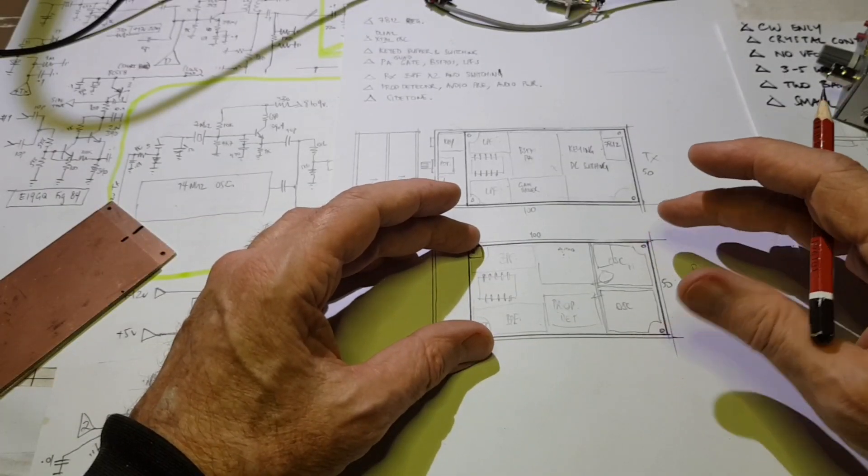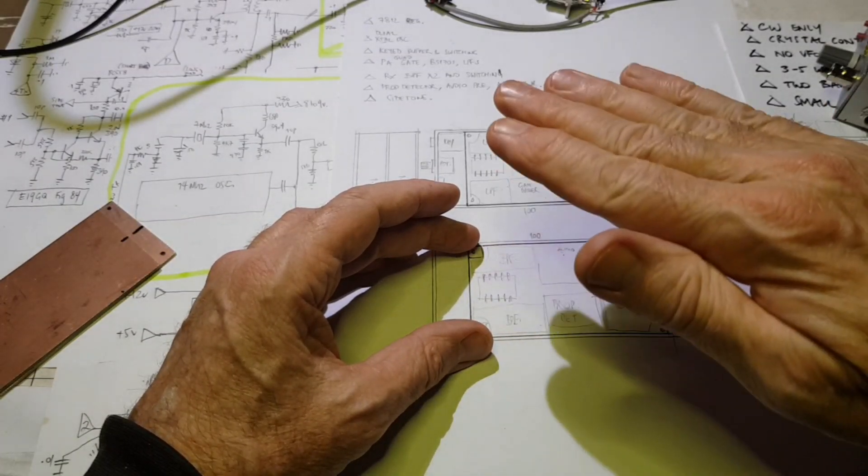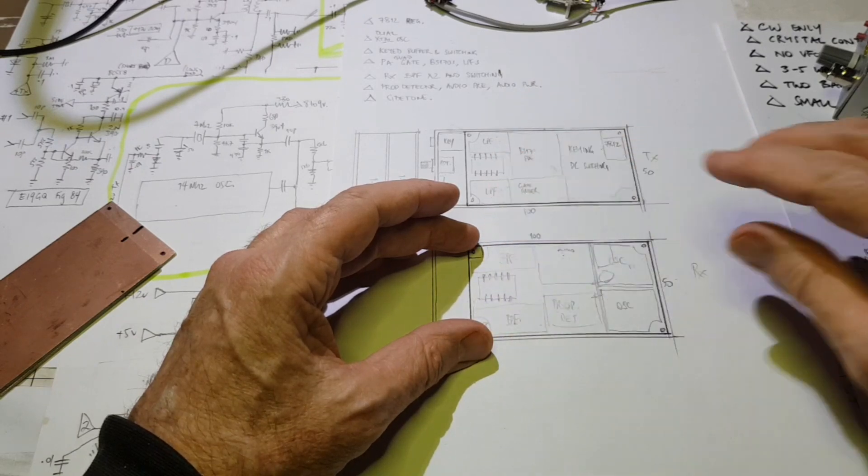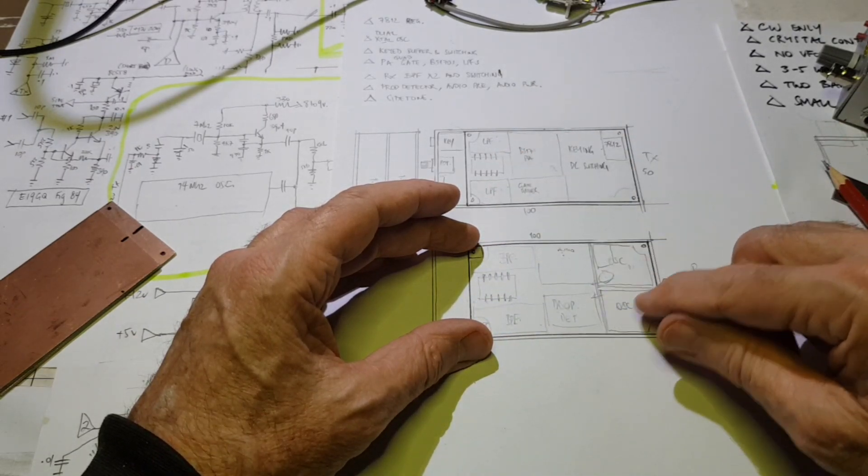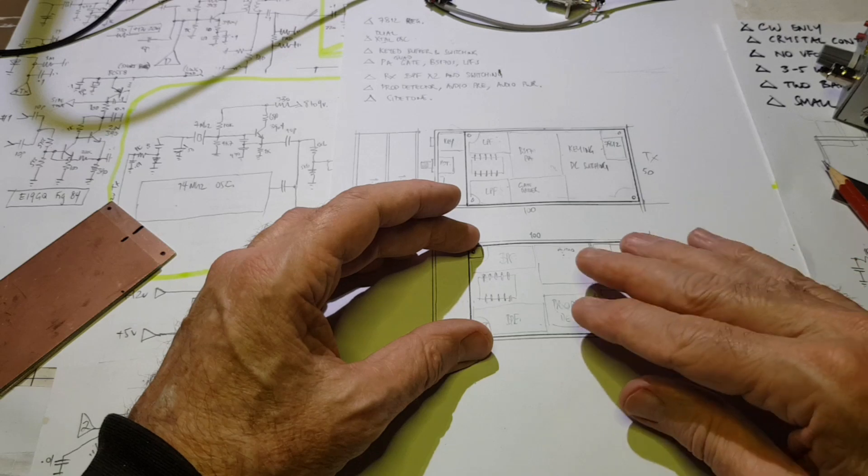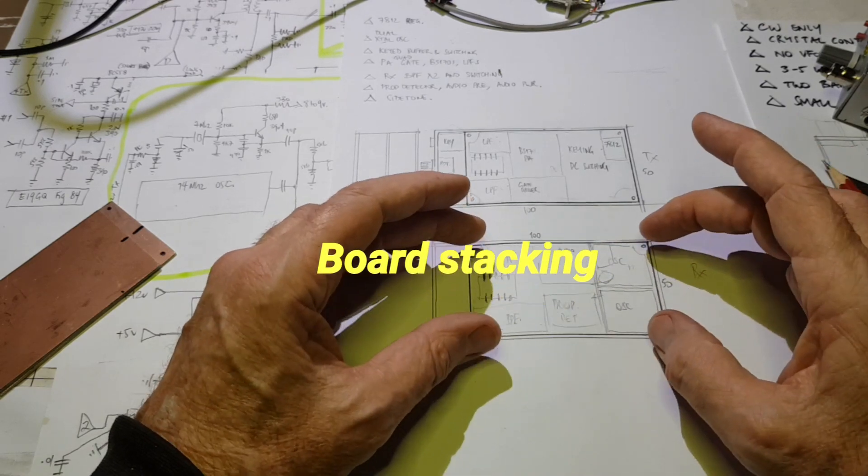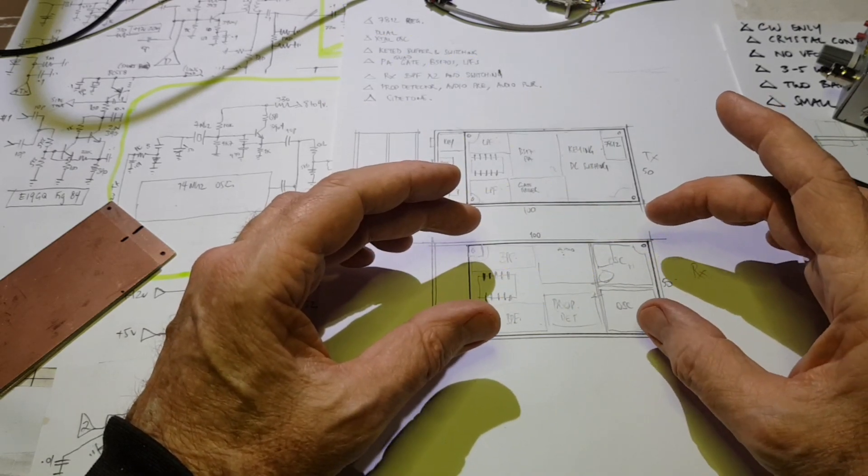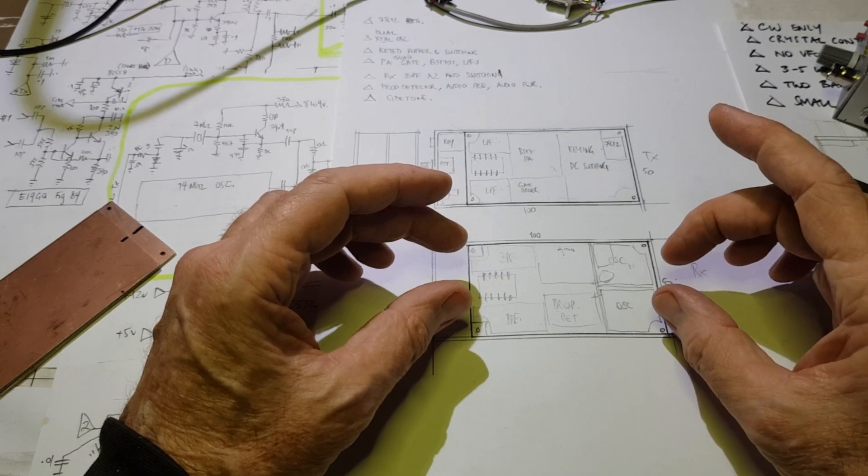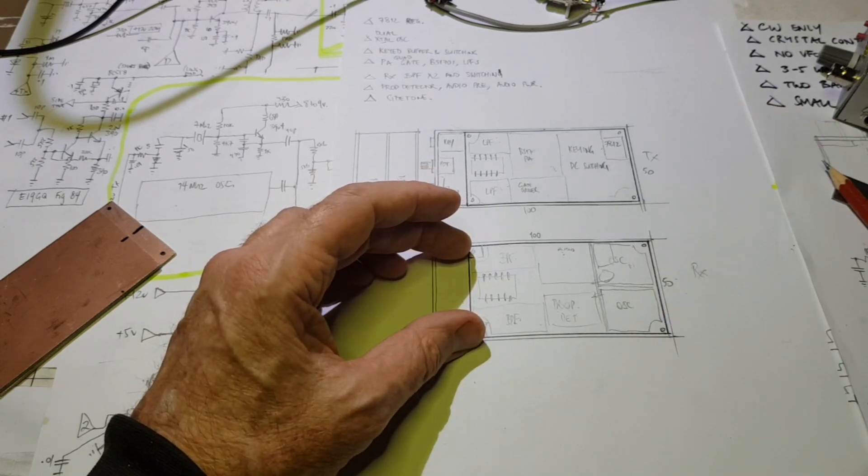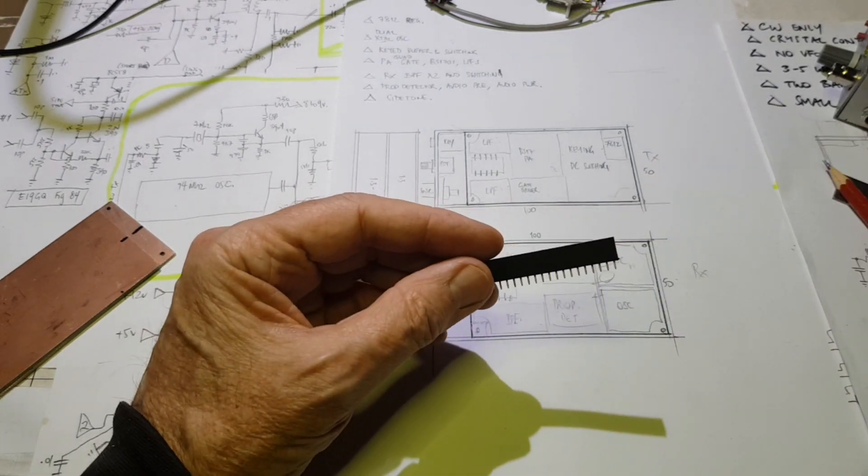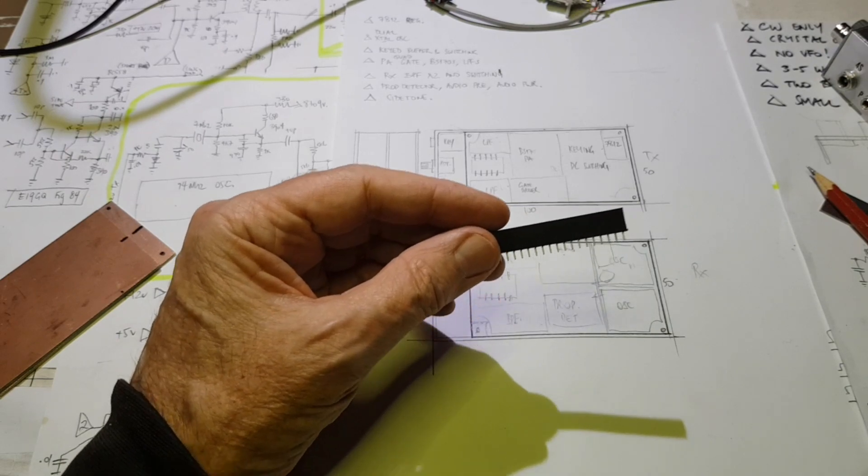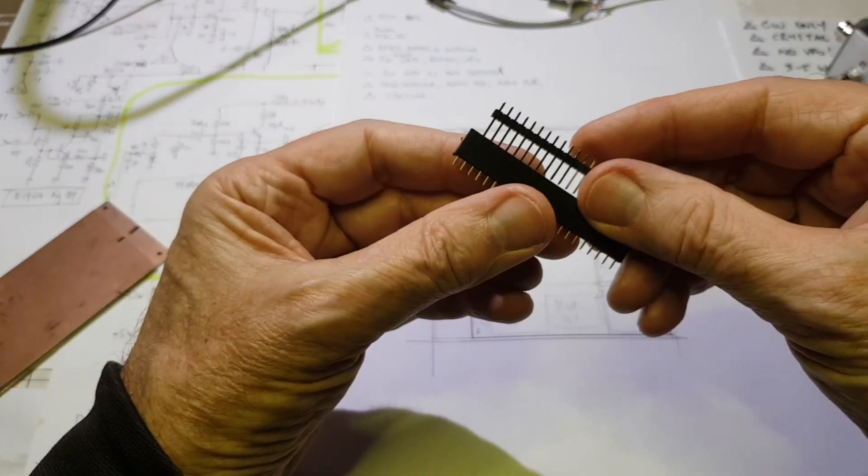The next challenge is if we're going to have two boards, sandwich boards, one on the bottom, one on the top. The options for stacking them are either threaded spacers or to use 0.1-inch headers like this.